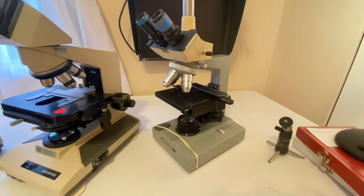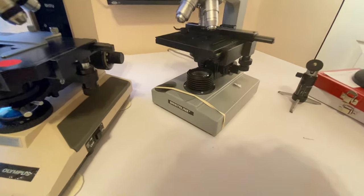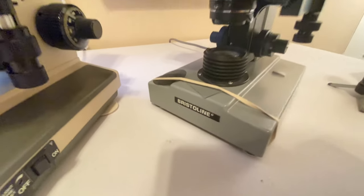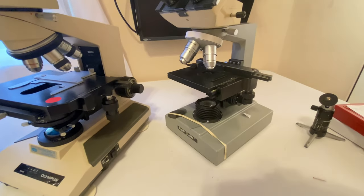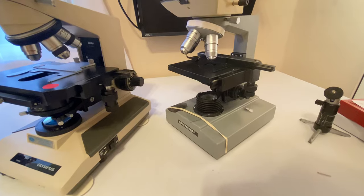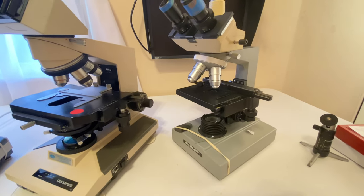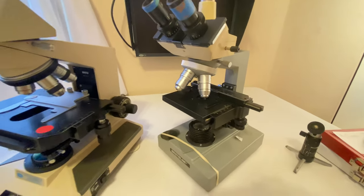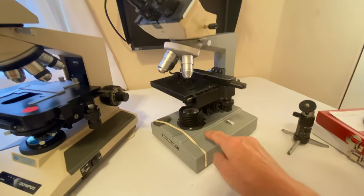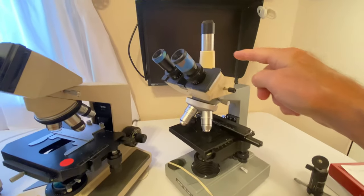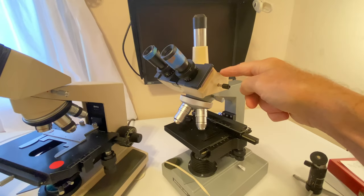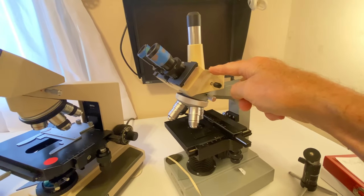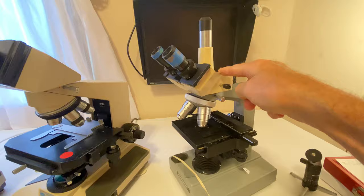This is my first microscope that I got by a company called Bristoline. I believe that Bristoline was an offshoot of Olympus, although I have no proof. But this particular Bristoline, as you notice, has a trinocular head. This trinocular head is actually from an Olympus, and it fits perfectly, as if it were meant to be.